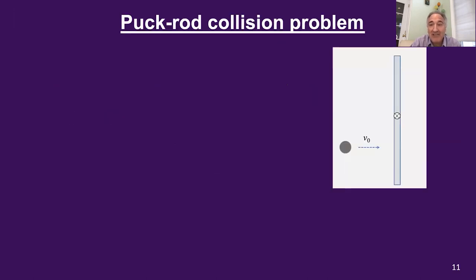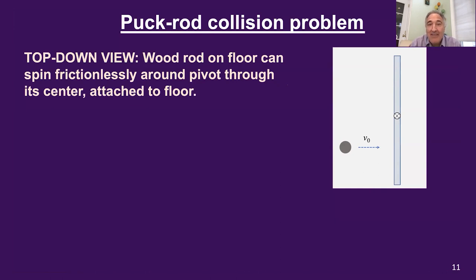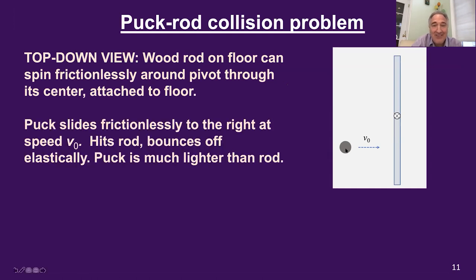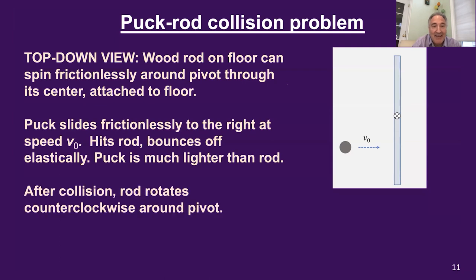Here's another problem: a puck-rod collision problem. In this figure, the gray circle is a hockey puck, and the blue rectangle is a rod. Importantly, this is a top-down view — the puck and the rod are both sitting on the floor. A nail is driven through the center of the rod attaching it to the floor, but the rod can rotate around that nail frictionlessly. The puck slides frictionlessly to the right at speed V-naught and is going to hit the rod and bounce off elastically. The puck is much lighter than the rod.